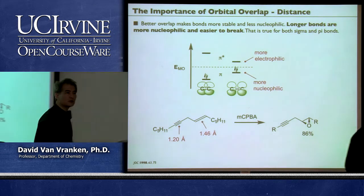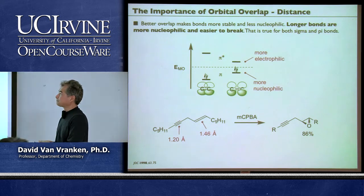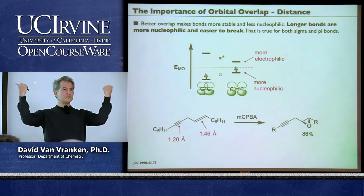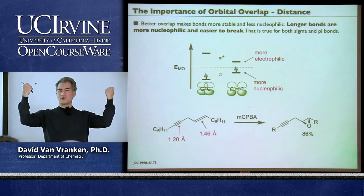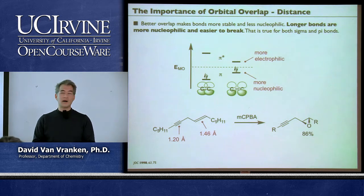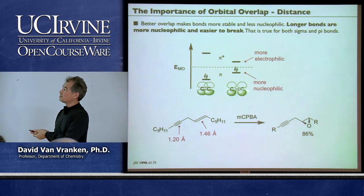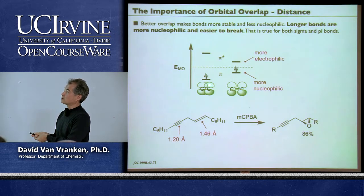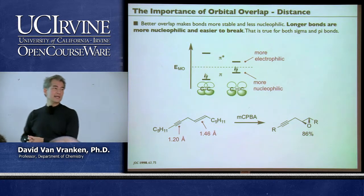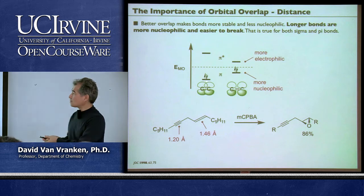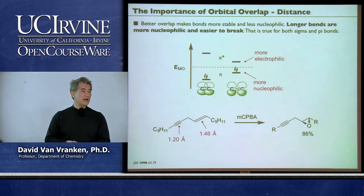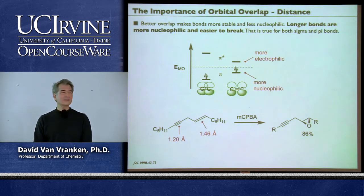Take two carbon atoms with p orbitals getting closer and closer together. Compare an alkyne versus an alkene—the bond distance in an alkyne is substantially shorter, so the p orbitals are closer together and overlap more effectively. When they overlap more effectively, they make a more stable pi bond—lower in energy. Better overlap makes a more stable pi bond.